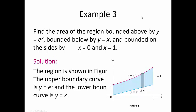The upper curve is e to the x, and below is y equals x, which is just a straight line. Notice how they don't intersect in this region at all, but I'm still telling you to find the area between x equals 0 and x equals 1.